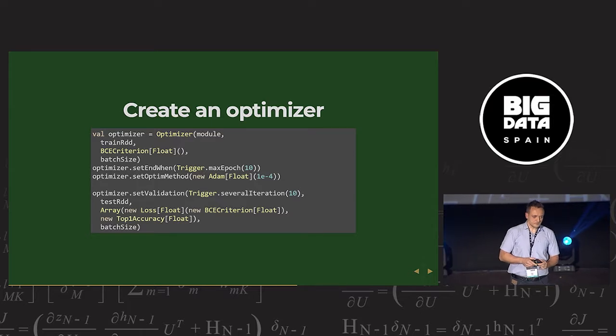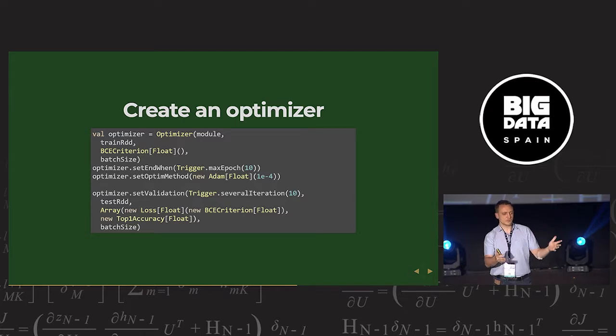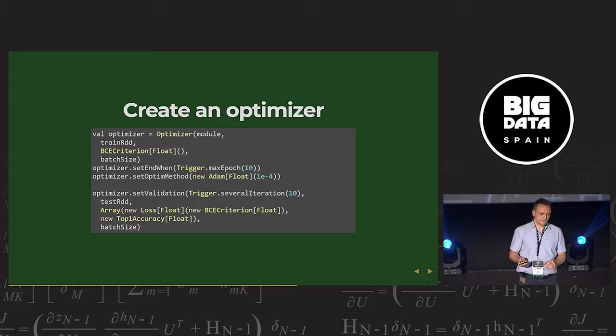If you have 10 executors and you specify batch size of 10, then in each iteration, each executor will use only one sample for training. So you want this to be some relatively high number, but not that high that you run out of memory. Then you say how long you want the training to last using the trigger function. For example, maximum number of epochs of 10. And epoch is when you go through all of your data in one pass, that's an epoch. So you want 10 passes through all of your input data. And you tell it what optimization method to use. Adam is one of the most often used. So it's also used here with learning rate of 10 to minus 4. And you can optionally set validation method. That it will each, again, trigger. In this case, it's 10 iterations. Each 10 iterations, it will validate your data on the validation set, the testing set. And you can specify several criterions to calculate during the validation. There you have loss using the binary cross entropy and top one accuracy. And then also you have to specify the batch size. So the optimizer is kind of important in BigDL.